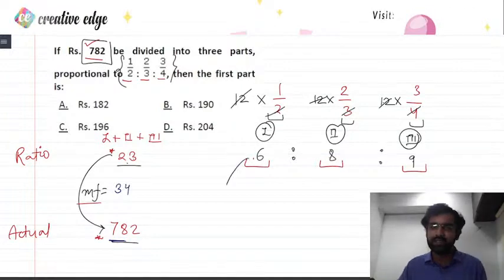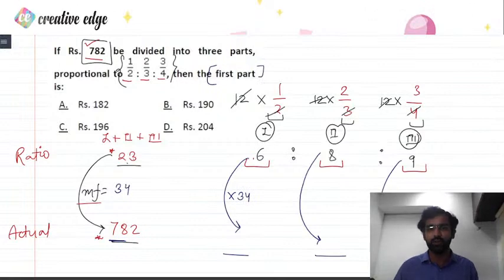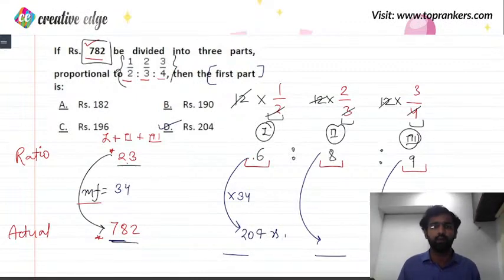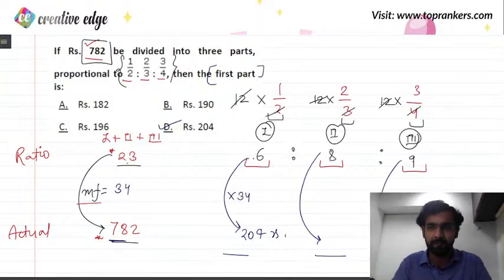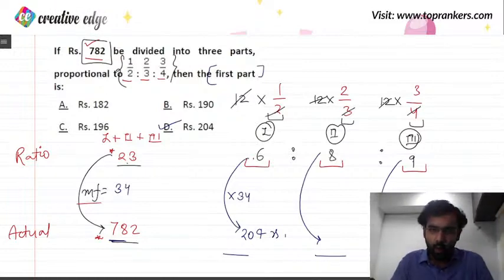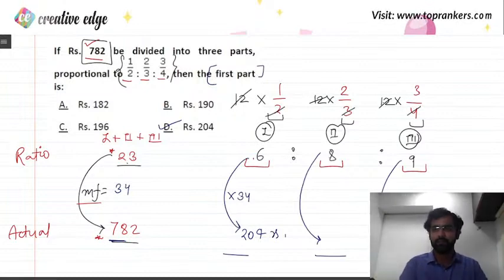The multiplying factor of 34 gives us all corresponding actual values, and the first part works out to 204 rupees. I hope that answers your query and you all have gotten a lot of clarity on ratios and proportions through these questions. If you still have any confusions, post your messages in the comments. In the next video, we will talk about percentages — so stay tuned. This was Dipendra from Design IFR, also known as Creative Edge. Thank you so much, take care everyone.